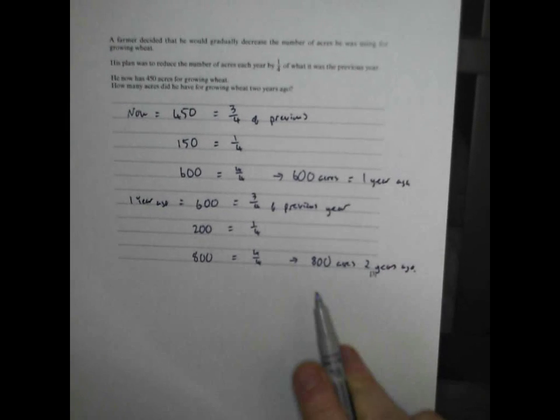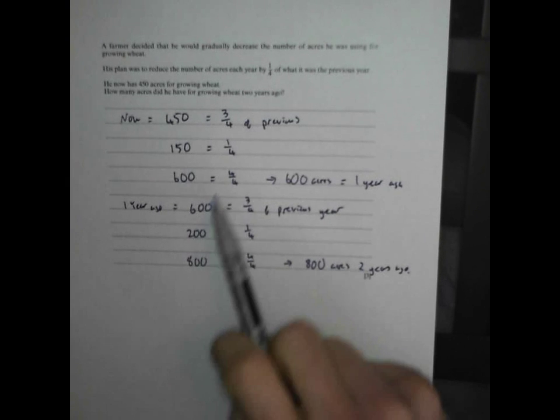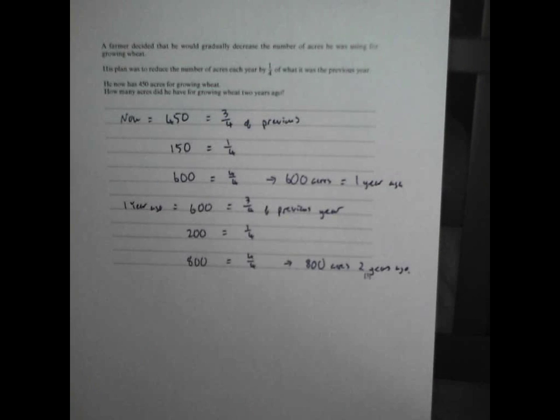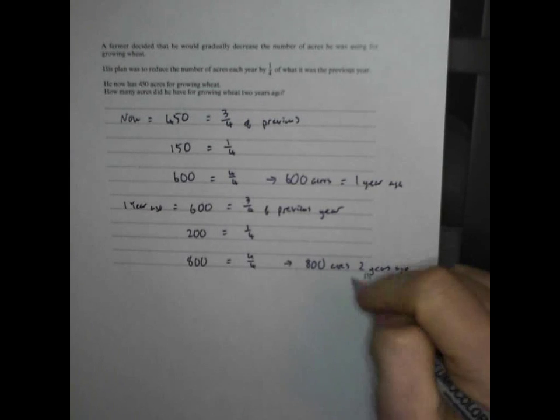And again, you can check that. If he's on 800 and you take a quarter of that off, a quarter is 200. Take that off, he's down to 600. Take a quarter of 600 off, which is 150. He's down to 450, which is what he started with. Perfect.